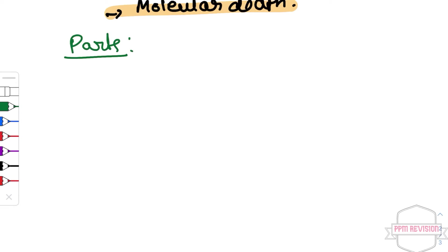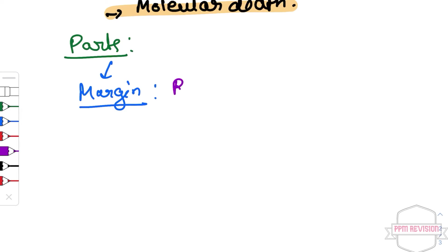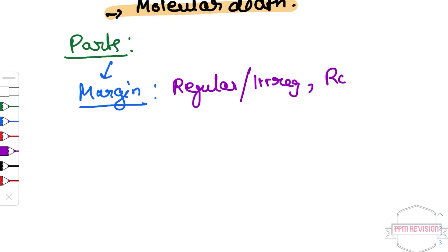Looking at the parts of an ulcer, there is the margin. The margin can be regular or irregular, and it can also be rounded or oval. These are the types of margin.